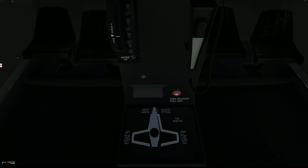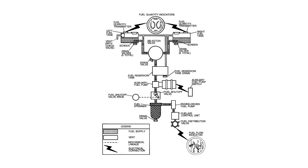Fuel Selector Valve, both. Fuel flows by gravity from the two wing tanks through the Selector Valve and onto the Reservoir Tank. The Fuel Selector Valve should be in the both position for takeoff, climb and landing. Operation from either the left or right tanks is reserved for cruise.